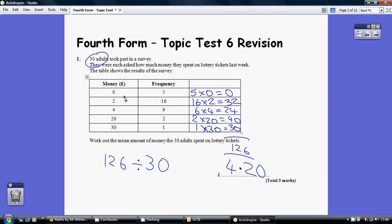Well, we've got 5 lots of 0, 16 lots of 2, 6 lots of 4 and so on. So we cross multiply, which I've done over here, add up this column and we can see that £126 was spent.